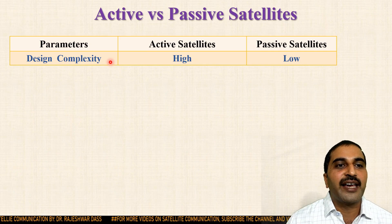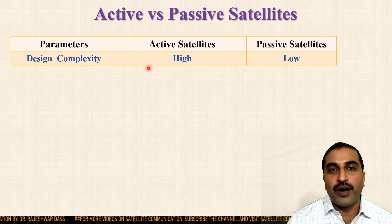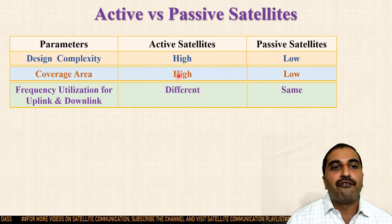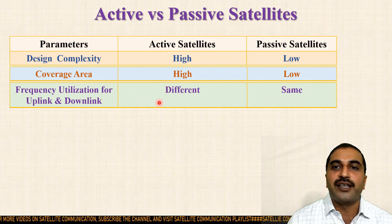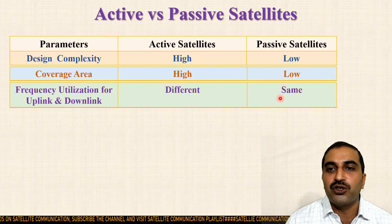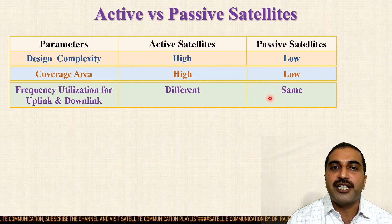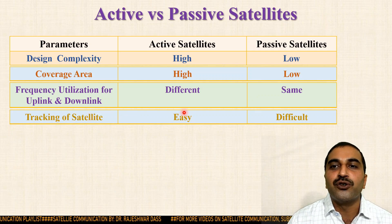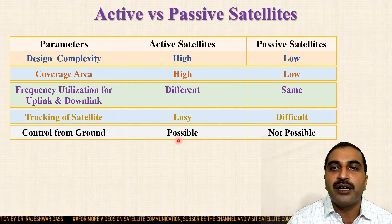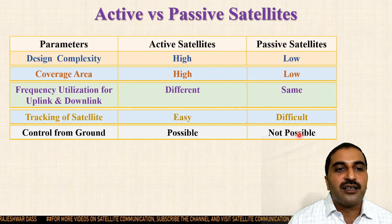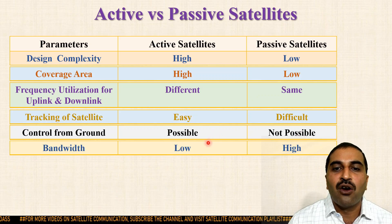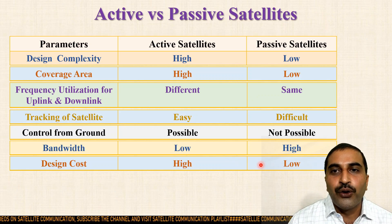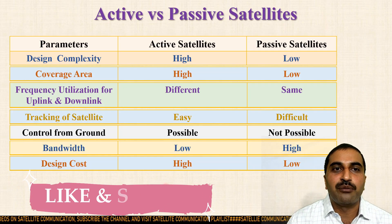We can compare active and passive satellites on the basis of different parameters. Design complexity is very high in active satellites compared to passive. Coverage area of active satellites is higher. Frequency utilization for uplink and downlink is different in active satellites, while it is the same in passive satellites — which is why interference chances are higher in passive satellites. Tracking of active satellites is easy compared to passive, and controlling active satellites from the ground is possible while passive cannot be controlled. Bandwidth utilization is low in active and high in passive satellites. Design cost is high in active and low in passive satellites.